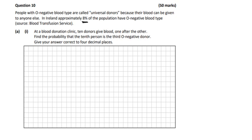So this is question 10. So people in Ireland — some people are O-. So 8% of people are O- in the population. So if there are 10 people chosen at random, what's the probability that the 10th person is the third O- person chosen out of the 10?